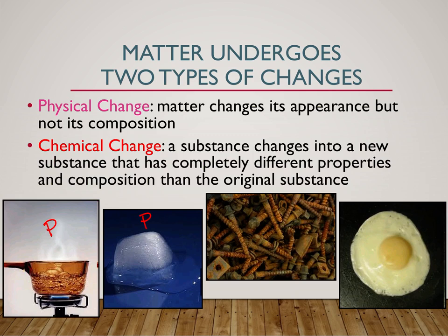A chemical change is when a substance changes into a completely new substance — it has totally different properties and totally different composition than the original substance. In the first picture for chemical change, we have iron nails or screws, and they appear to have rusted, which means that the iron reacted with the oxygen in the air and produced iron(III) oxide, better known as rust. So that is a chemical change — the iron reacted with oxygen and made iron(III) oxide. It's no longer iron and oxygen; now it's rust.